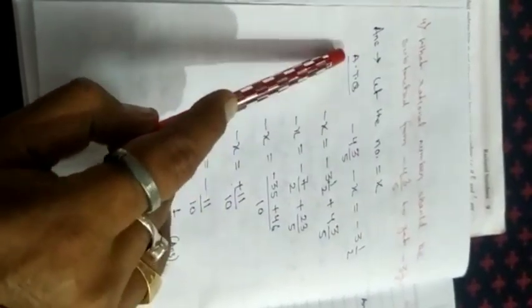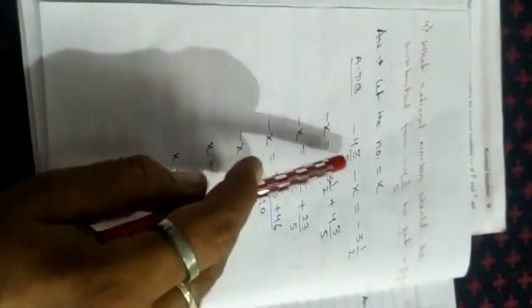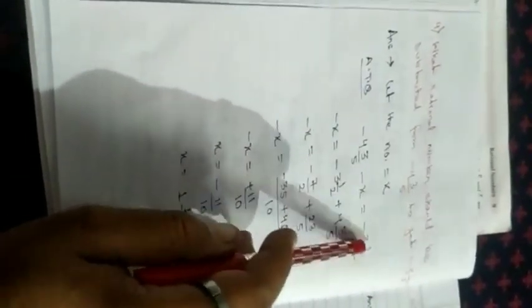Next, I am going to solve question number 4. What rational number should be subtracted from minus 4 3/5 to get minus 3 1/2? Let the number be equal to x. According to the question, minus 4 3/5 minus x equals minus 3 1/2. Then minus x equals minus 3 1/2, and when minus 4 3/5 goes to the right hand side it becomes plus 4 3/5. Change both mixed fractions to improper fractions: 2 times 3 is 6 plus 1, giving minus 7/2, plus 5 times 4 is 20 plus 3, giving 23/5.